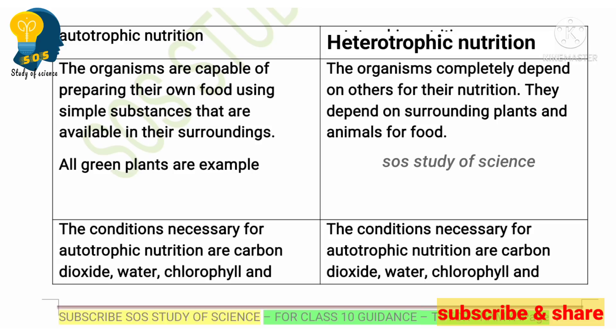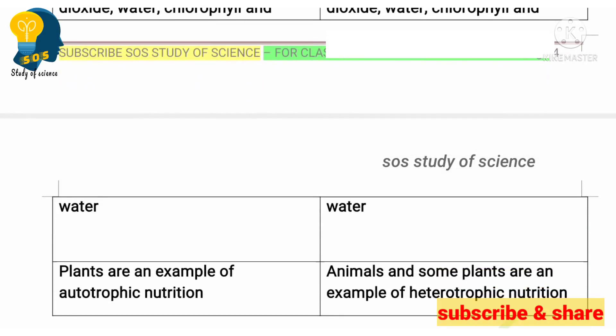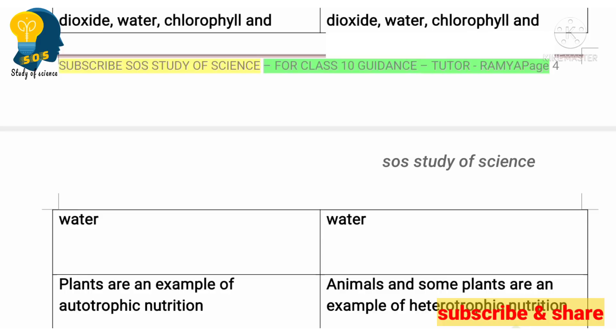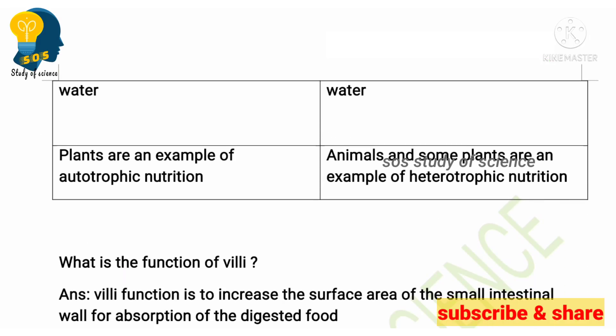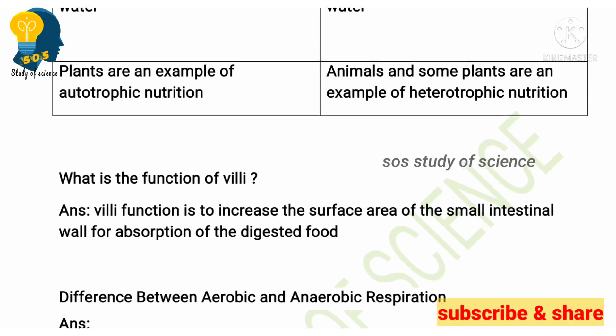Autotrophic nutrition: 'auto' means self. Organisms which are capable of preparing their own food using simple substances are called autotrophs, and this mode of nutrition is called autotrophic nutrition — for example, all green plants. Heterotrophic nutrition: organisms that completely depend on other organisms for their food are called heterotrophs — for example, all animals and some non-green plants. Conditions necessary for autotrophic nutrition are carbon dioxide, water, chlorophyll, and sunlight. This is very important — learn it 100%.